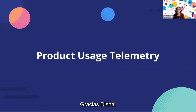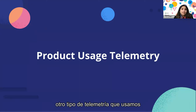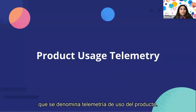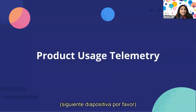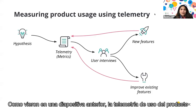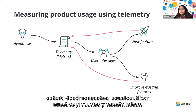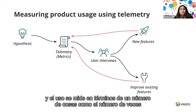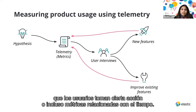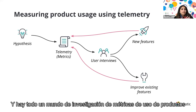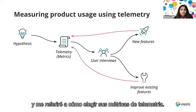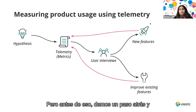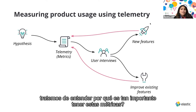I'm going to talk about another type of telemetry we look at: product usage telemetry. Product usage telemetry is all about how our users are using our products and features. Usage is measured in terms of counts, whether users took certain actions, or time-related metrics. There's a whole world of product usage metrics out there — I'll touch on how to choose your telemetry metrics.